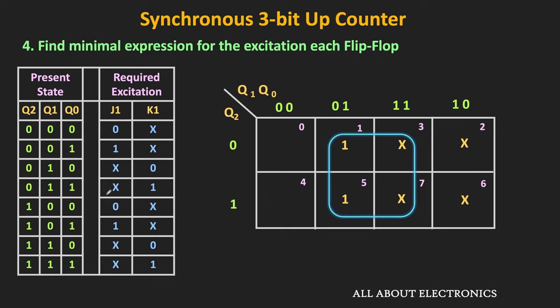Now let us find the minimal expression for J0 and K0. In both the J0 and K0 columns, the output is equal to 1 for four different input combinations, while the remaining four are don't-care terms. If we consider all don't-care terms as logic 1, then J0 and K0 = 1 for all input combinations. In the K-map, we can make a group of 8 ones. So both J0 and K0 = 1.